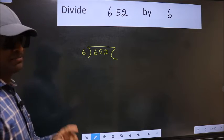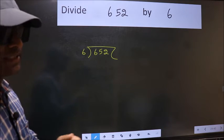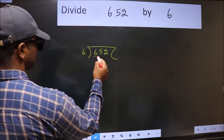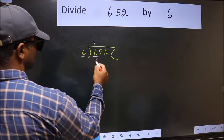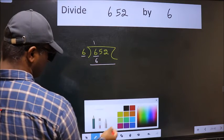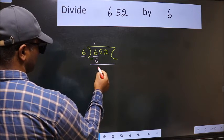This is your step 1. Next, here we have 6 and 6 here. When do we get 6 in the 6 table? 6 once 6. Now we should subtract. We get 0.